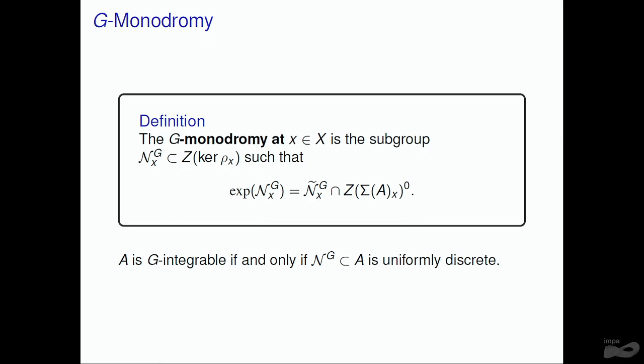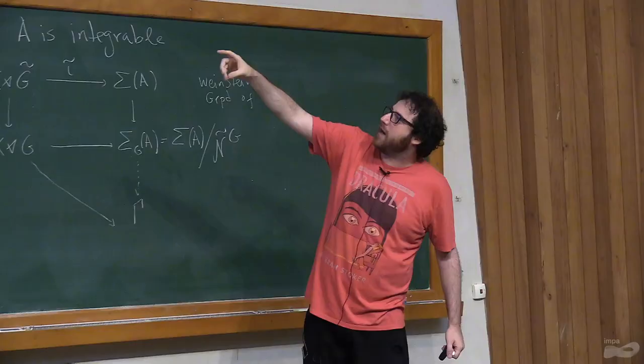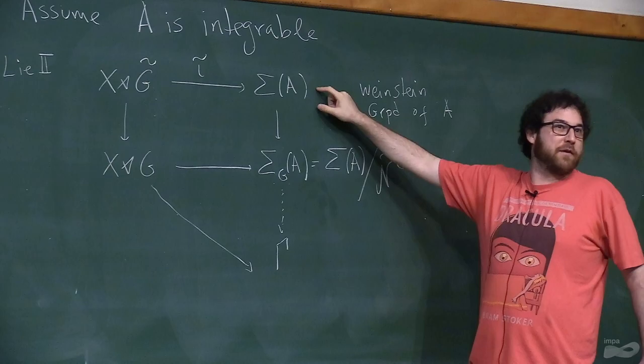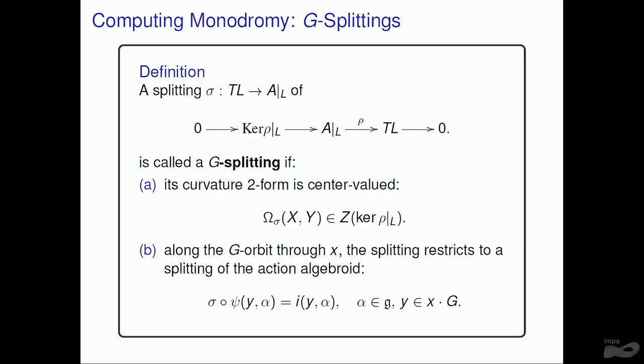Working at the level of Lie algebraids, you can play the usual trick: since these things lie in the center of the isotropy group, you can identify the connected component of the center of the isotropy group with the center of the Lie algebra using the exponential, and define the G-monodromy as the group which exponentiates to the extended G-monodromy. A is G-integrable if and only if this monodromy is uniformly discrete inside A. Importantly, I removed the hypothesis of A being integrable when expressing this, because the usual monodromy of A is contained inside the G-monodromy — so if the G-monodromy is discrete, the usual monodromy is discrete.